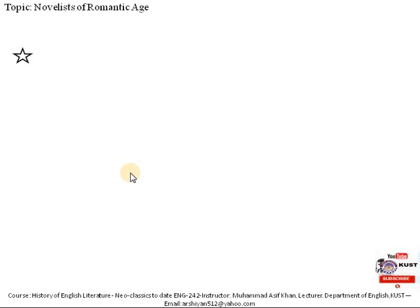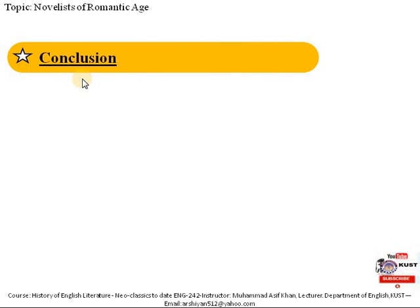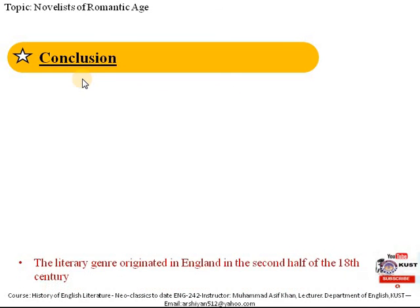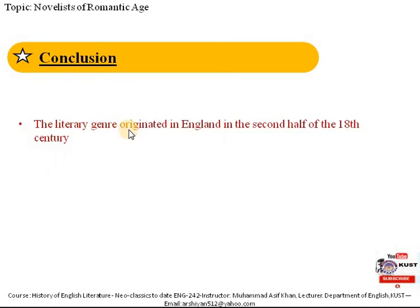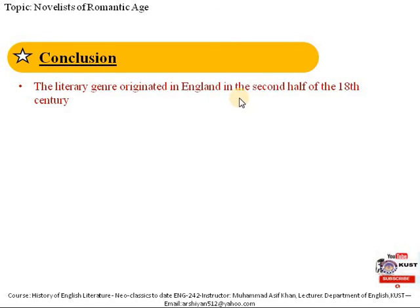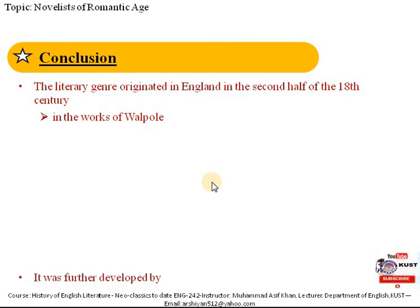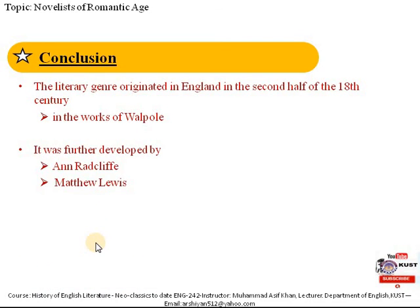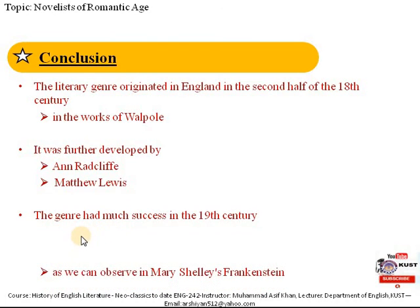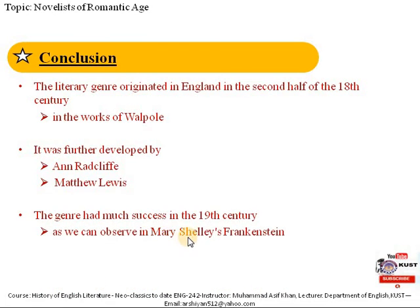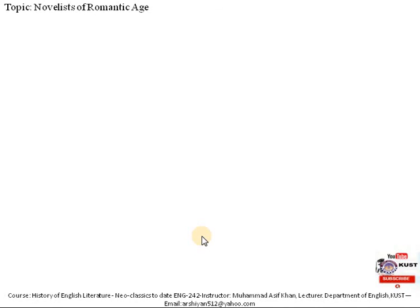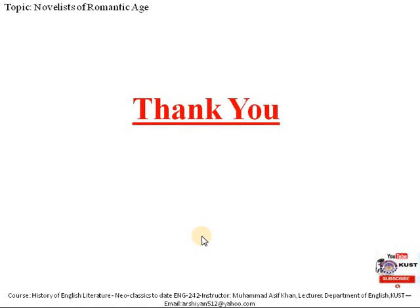In conclusion, the genre of Gothic novels started in England in the second half of the 18th century with the works of Horace Walpole. It was developed by Mrs. Ann Radcliffe and Matthew Lewis, and we also discussed Mrs. Shelley's important Gothic novel Frankenstein. Thank you very much for listening. See you in the next lecture.